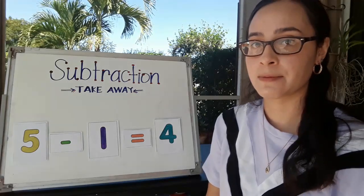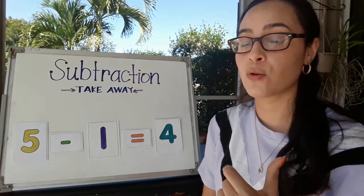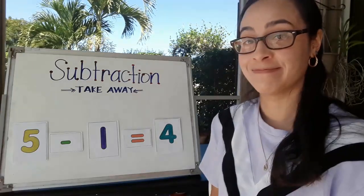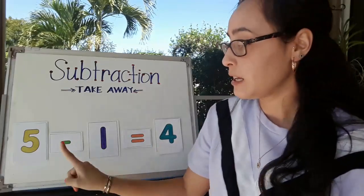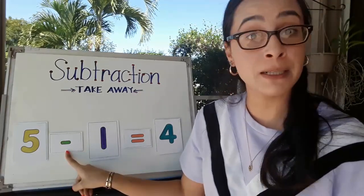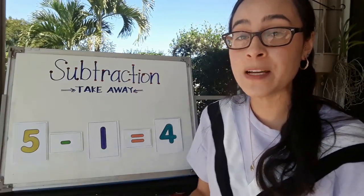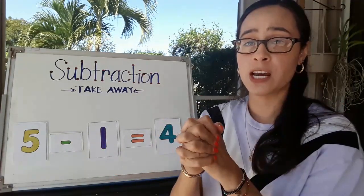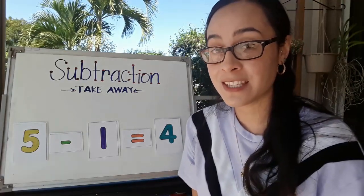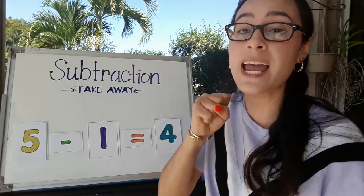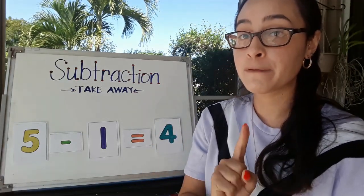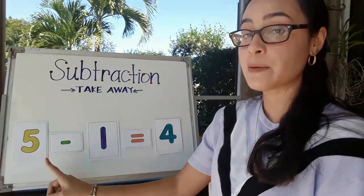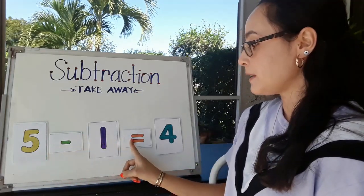Here's another number sentence. Is this an addition number sentence or a subtraction number sentence? Look at the symbol. This is a subtraction number sentence and we can tell because this is a minus sign, which means we're going to take away some numbers. Remember how addition means we take two numbers, smoosh them together, and we get a bigger number? Now this number sentence is telling us to take away some numbers. Let's read the number sentence together: five minus one equals four.